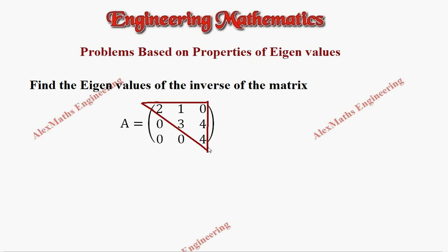We already discussed a property: in a triangular matrix, the eigenvalues are nothing but the elements present in the leading diagonal. So here the elements present are 2, 3, and 4. Therefore, the eigenvalues of A equal lambda 1, lambda 2, and lambda 3.